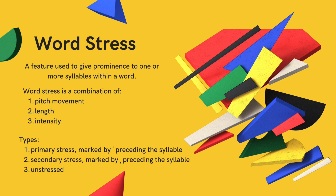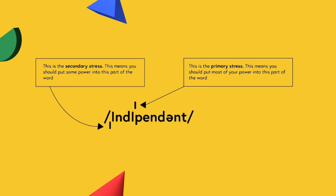Let's take a look at an example. The word 'independent' has four syllables: in-de-pen-dent. The first syllable carries secondary stress, meaning you should put some power into this part of the word. The second syllable, 'de', is unstressed. The third syllable, 'pen', carries the primary stress, which means you should put most power from your lungs into this part of the word. And finally, the fourth syllable, 'dent', is unstressed. Independent.